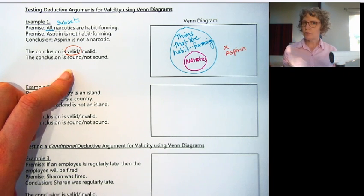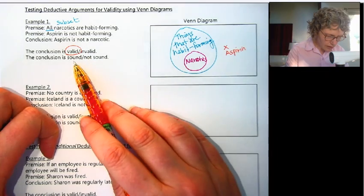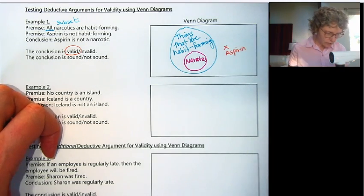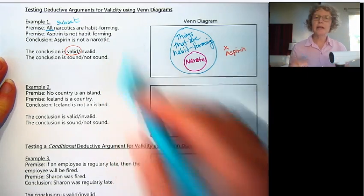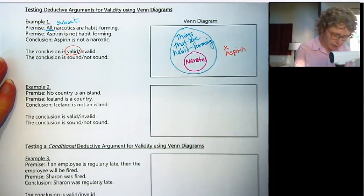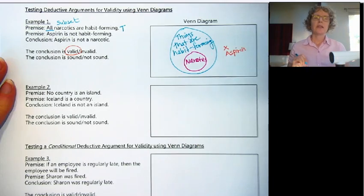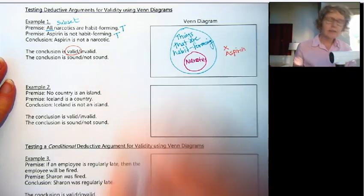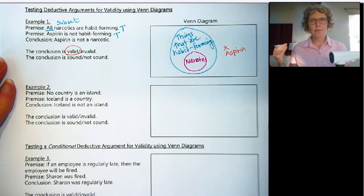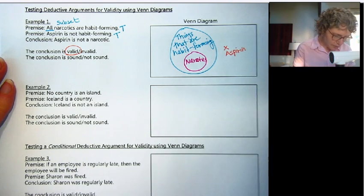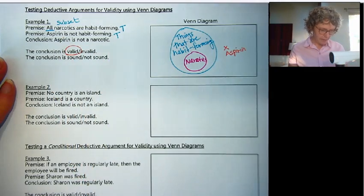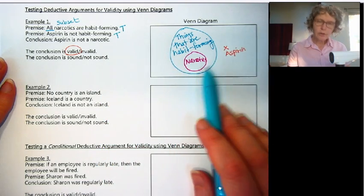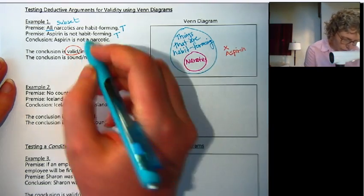It's valid because our conclusion follows from the two premises. Now let's check if it's sound by looking at whether each premise is true or false. All narcotics are habit-forming — I looked it up, that is true. Aspirin is not habit-forming — by itself it's not, though it can be when combined with habit-forming medications. So our premises are true, and with a valid argument, this conclusion is sound.